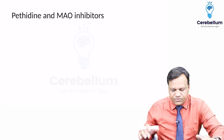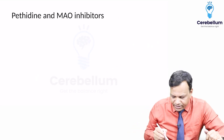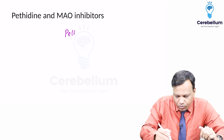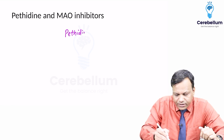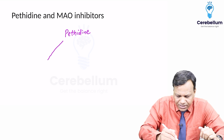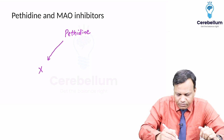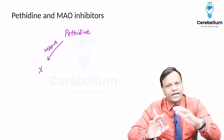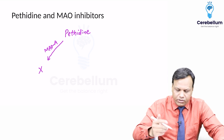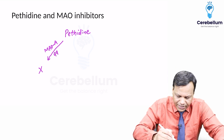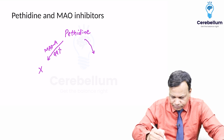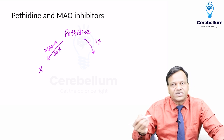The next interaction is between pethidine and MAO inhibitors. Pethidine is an opioid used as a painkiller. Most of pethidine becomes inactive by monoamine oxidase A (MAO-A), which metabolizes pethidine and makes it inactive. About 99% of pethidine is inactivated this way.